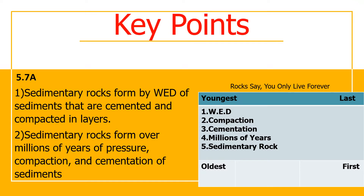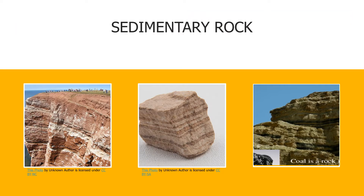It all starts with weathering, erosion, and deposition. When wind, water, or ice breaks, carries, and deposits sediments, over time those layers will be compacted. Because of the heat and pressure of the compaction, those layers will be cemented — they will be glued together. After millions of years, layer after layer being compacted and cemented, it will form sedimentary rock.